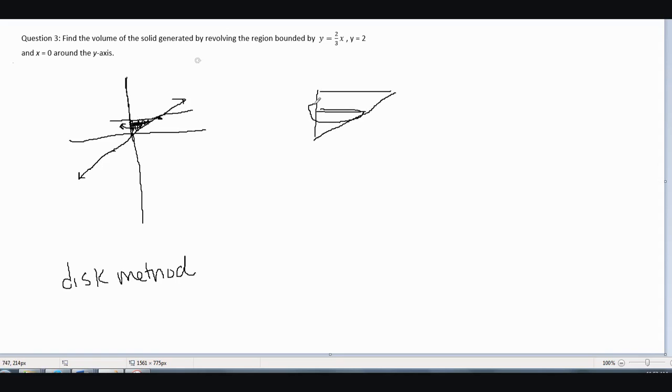We have a disk, and this is our radius. The radius is this line minus zero, so just the equation for this line. But we need to rewrite it in terms of y, since we're revolving around the y-axis.